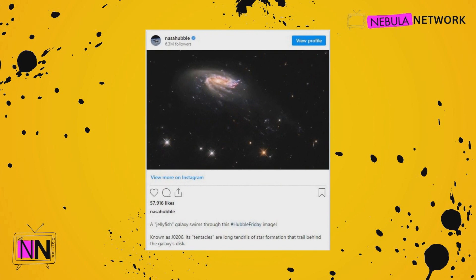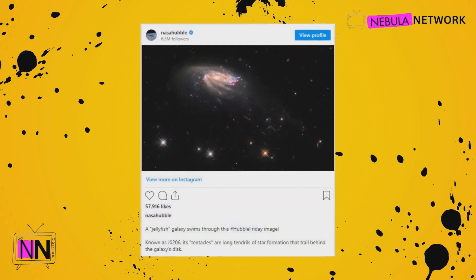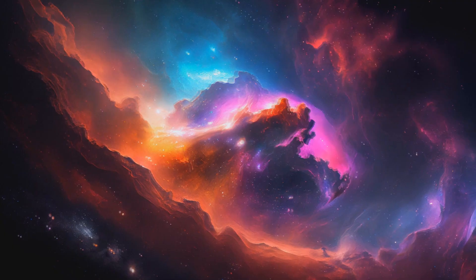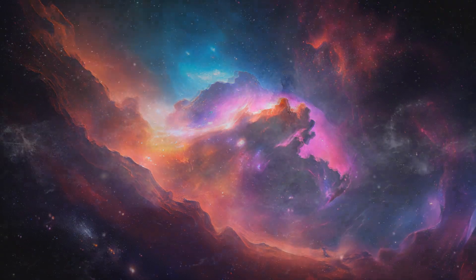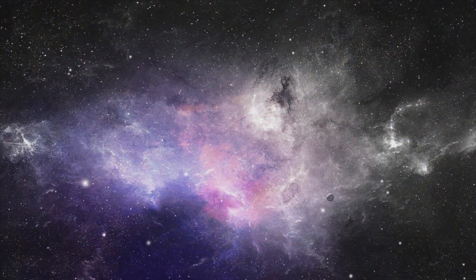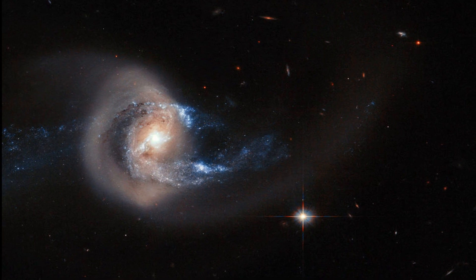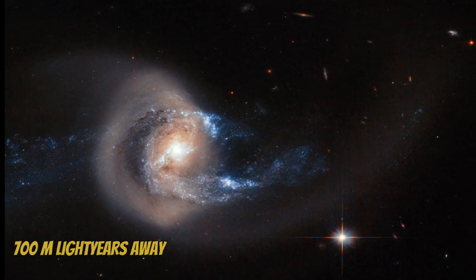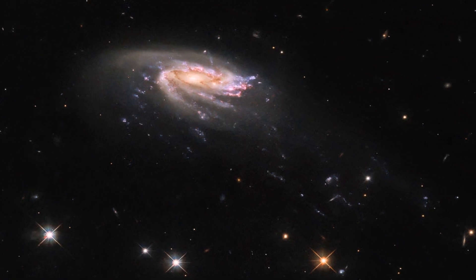NASA has shared this extraordinary image on their NASA Hubble Instagram page, giving us a glimpse of the wonders that lie beyond our own planet. This particular galaxy, known as J0206, is an astonishing 700 million light-years away, residing within the Aquarius constellation.